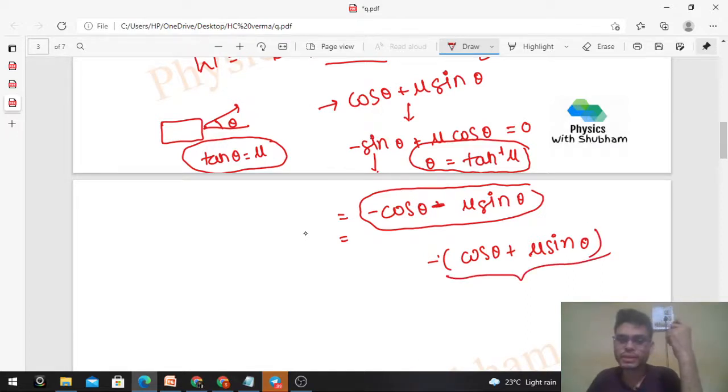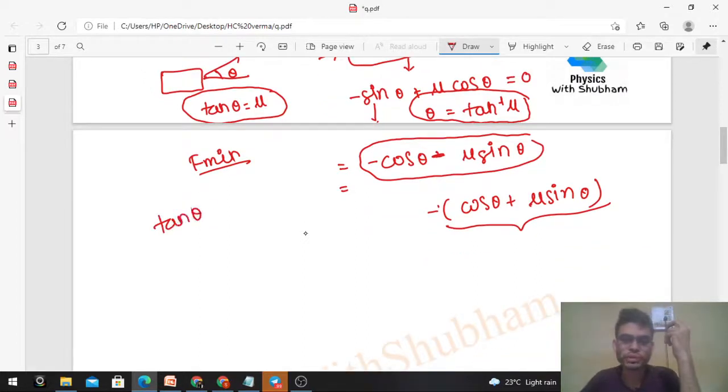What does that mean? The critical value is for maxima. So at tan θ equals μ, this function cos θ plus μ sin θ will be maximized. That means F will be minimized. F will be minimum at θ equals tan inverse μ. From here, tan θ equals μ equals 0.2. So you get θ, then you can easily find out the work, because work is also a function of θ.